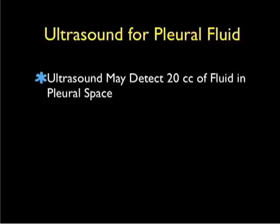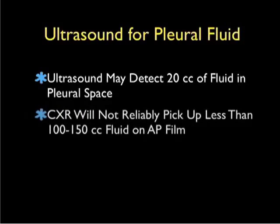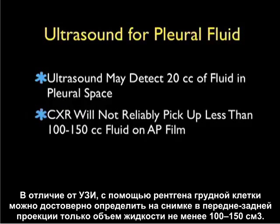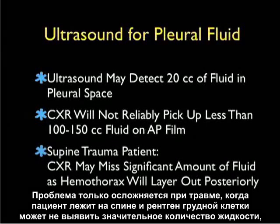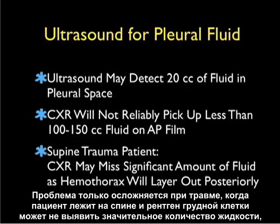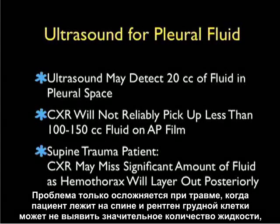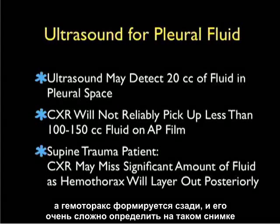Interestingly enough, ultrasound has been found to detect as little as 20 cc's of fluid within the pleural space. In contrast, a chest x-ray will not reliably pick up less than 100 to 150 cc's of fluid on an AP film. This problem is only compounded in the supine trauma patient, where a chest x-ray may miss a significant amount of fluid, as a hemothorax will layer out posteriorly and can be very difficult to detect on this film.